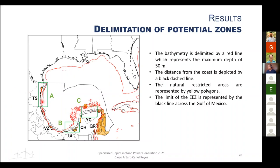The three potential zones are: Zone A in eastern Tamaulipas, Zone B in northern/southern Yucatan and southern Campeche, and Zone C in northern Yucatan. The northern Yucatan area is particularly notable for having a large available area and is considered an excellent zone for development.